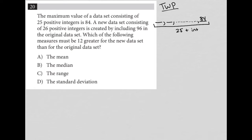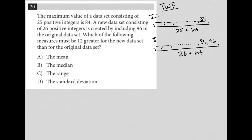The next sentence says a new data set consisting of 26 positive integers is created by including 96 in the original data set. So for data set two, I'd have the exact same set of numbers, including the 84, but I'm also going to add in a 96. Now I have 26 positive integers. Right now I'm just translating what I read. The next sentence asks: which of the following measures must be 12 greater for the new data set than for the original data set?